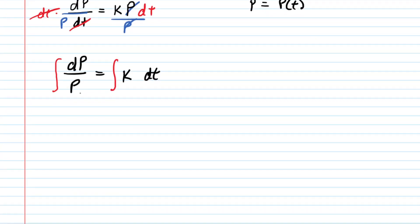You may recall from a calculus course that the left side integral will become the natural log of the absolute value of P, and on the right side, when you're integrating a constant with respect to the variable t, you end up with k multiplied by t, plus an arbitrary constant. We'll be solving for that momentarily.